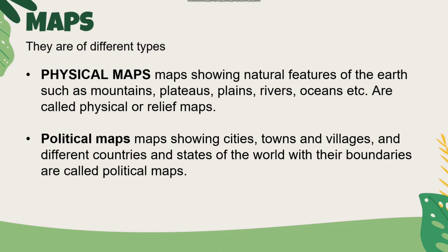What are the types of maps? Physical map and political map. A physical map shows the natural features of Earth: mountains, plateaus, plains, rivers, and oceans. This is a physical map. A relief map also shows plains and rivers and is a type of physical map.